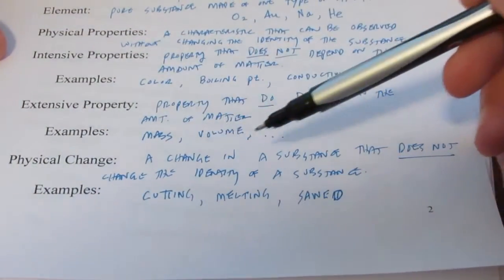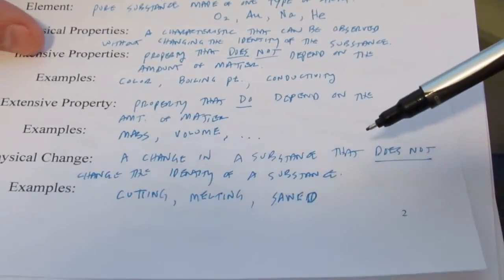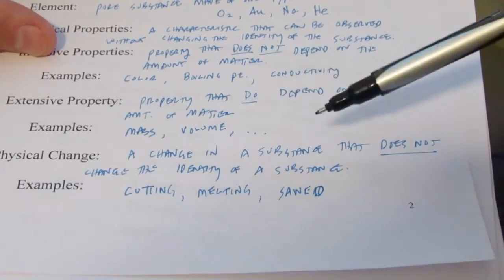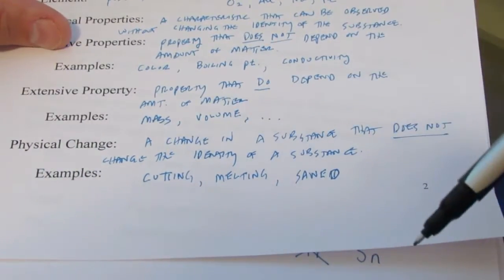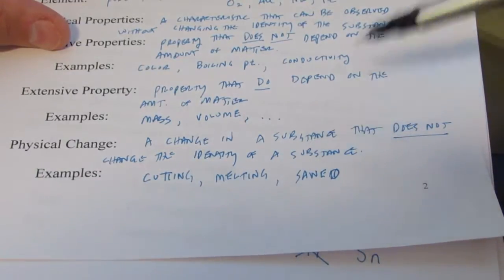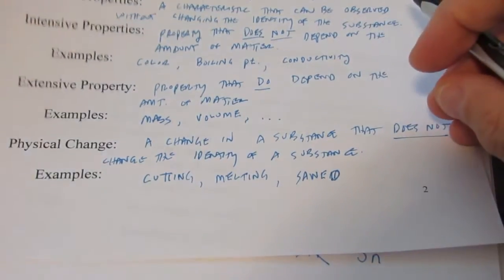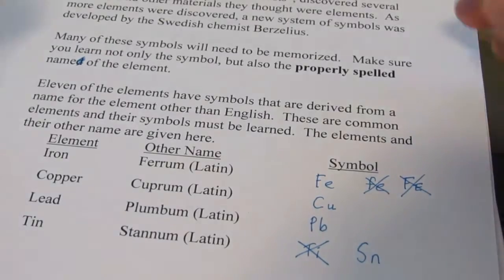We talked about physical changes. So we're changing the substance. It's a change in the substance, but we're not changing its identity. So I can chop up paper. I can melt butter. I can saw a piece of wood. We still have chemically the same substances after that change has occurred.